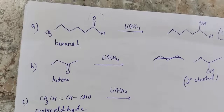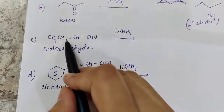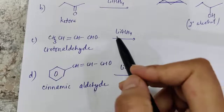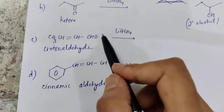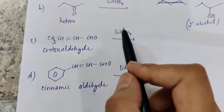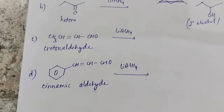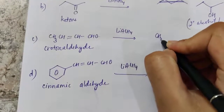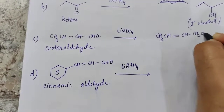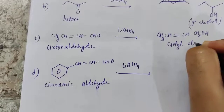The third reaction involves propenal (proton aldehyde), which has a conjugated double bond present with the aldehyde group. Since lithium aluminium hydride reduces aldehydes but has no effect on double bonds, the product in this case is CH₃-CH=CH-CH₂OH. This product is crotyl alcohol.